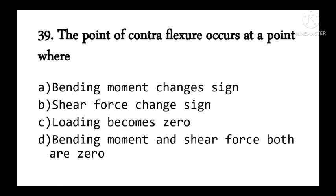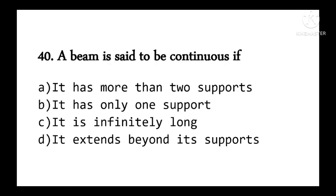The point of contraflexure occurs at a point where the bending moment changes sign. A beam is said to be continuous if it has more than two supports.